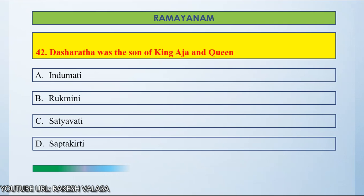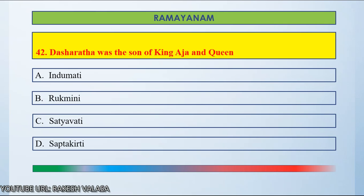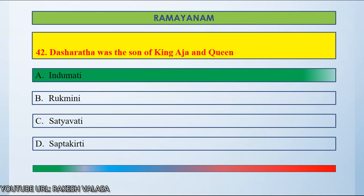If you know the answer, please post in the comment section. Time up. The answer is Indumati. Dasharatha was the son of King Aja and Queen Indumati.